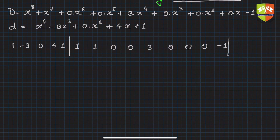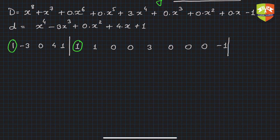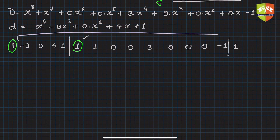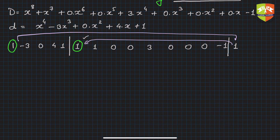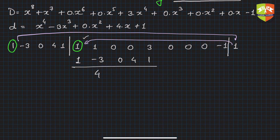Now follow the usual long division method with these coefficients. The first target digit is 1. What do I multiply the leading divisor coefficient by to get 1? Simply 1. So write 1 in the quotient row. Multiply 1 by each divisor coefficient: 1, −3, 0, 4, 1. Subtract from the dividend row, giving: 0, 4, 0, −4, 2. Then bring down the next coefficient: 0.